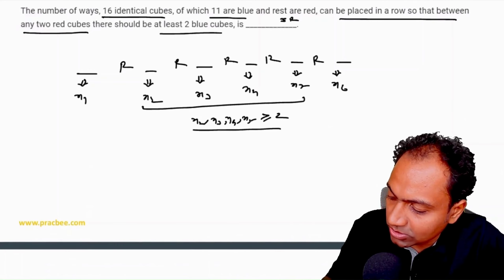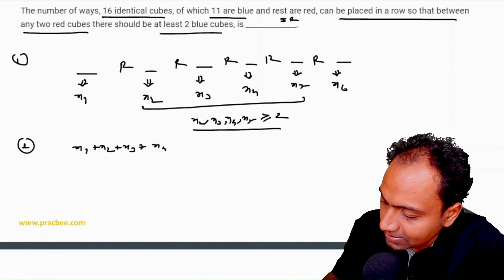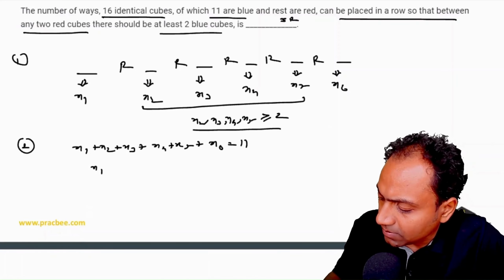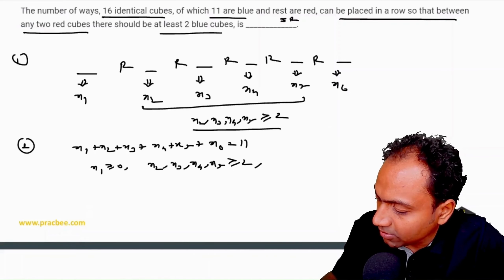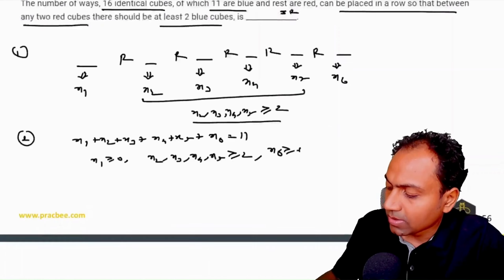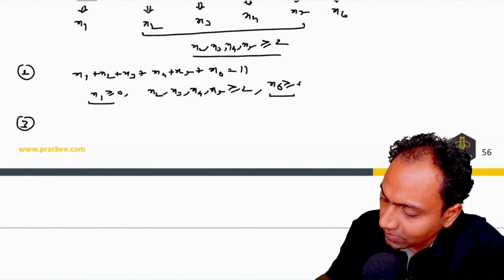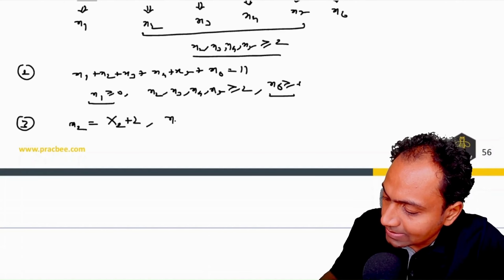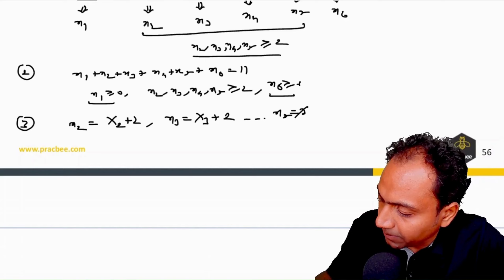In mathematical terms: x1 + x2 + x3 + x4 + x5 + x6 = 11, where x1 ≥ 0, x2, x3, x4, x5 ≥ 2, and x6 ≥ 0. To apply beggar's method, we substitute: X2 = x2−2, X3 = x3−2, X4 = x4−2, X5 = x5−2, keeping x1 and x6 as is.